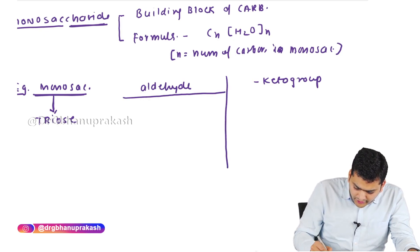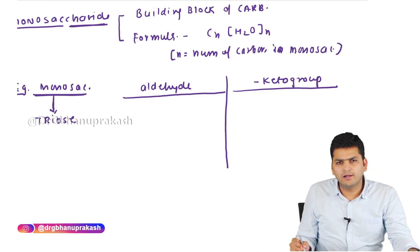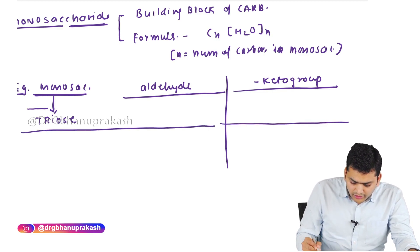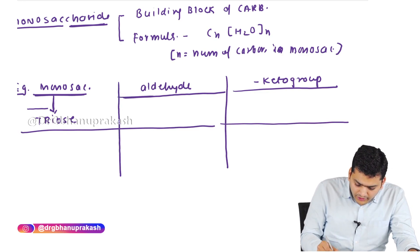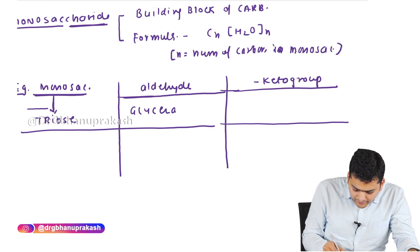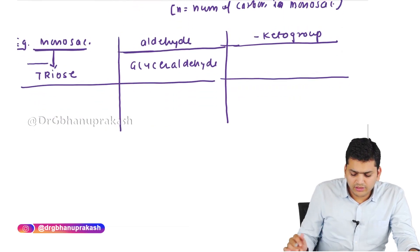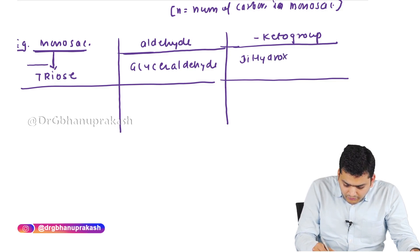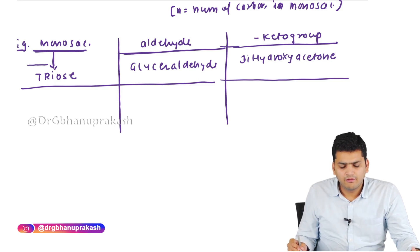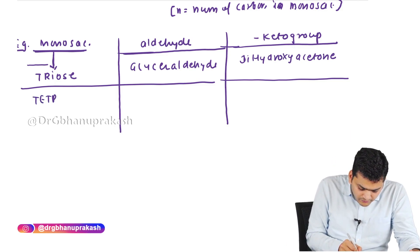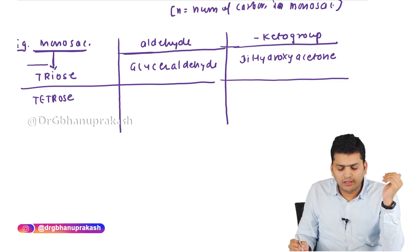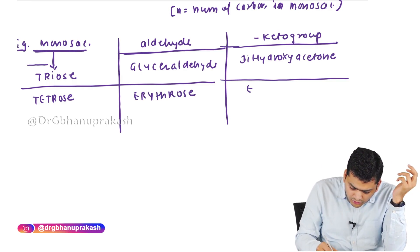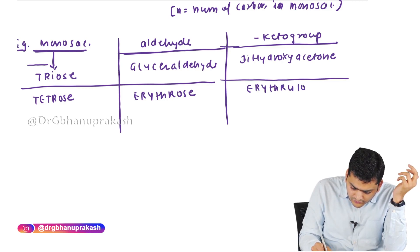For the tetrose: with the aldehyde group the name is erythrose; with the keto group it is erythrulose. For five-carbon monosaccharides (pentose): with the aldehyde group examples are xylose or ribose; the keto versions are xylulose and ribulose.